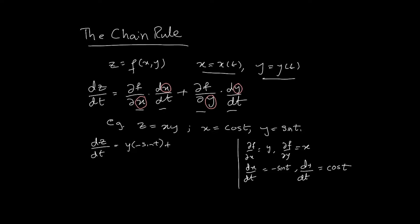We can't leave the answer in terms of x and y — we need to substitute back. Using x = cos(t) and y = sin(t), we get dz/dt = −sin²(t) + cos²(t). By trigonometric identities, cos²(t) − sin²(t) = cos(2t), so the answer is dz/dt = cos(2t).